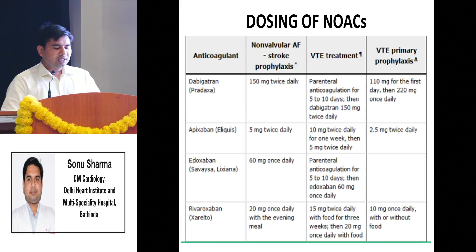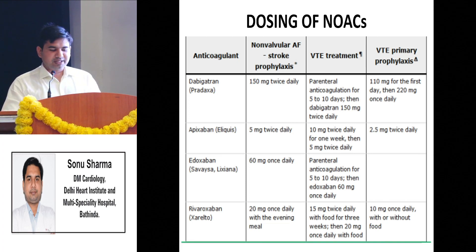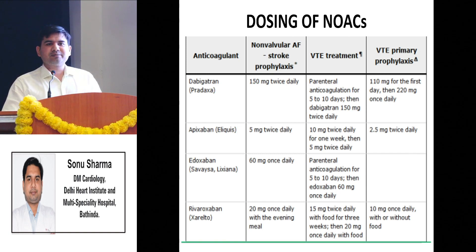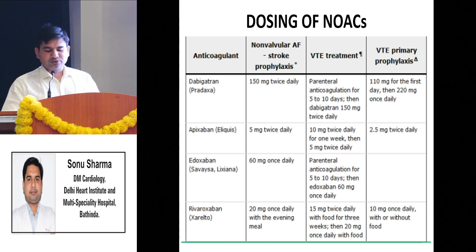The doses are: dabigatran 150mg twice a day, apixaban 5mg BD, edoxaban 60mg OD, and rivaroxaban 20mg OD for non-valvular AF. For venous thromboembolism they have different doses.